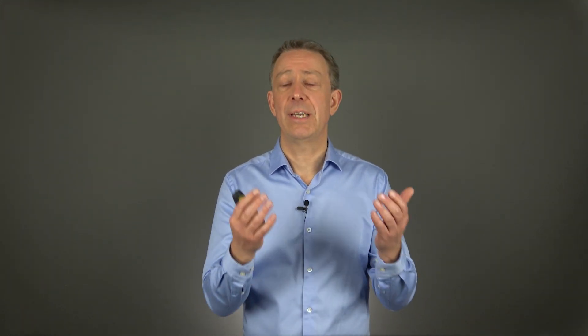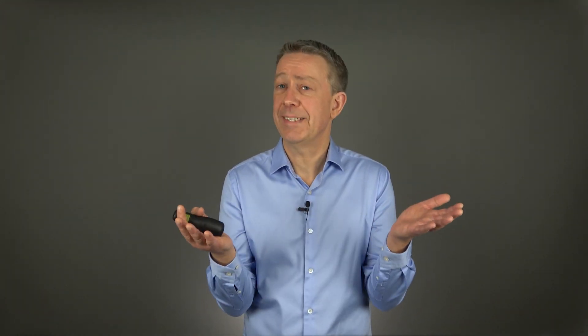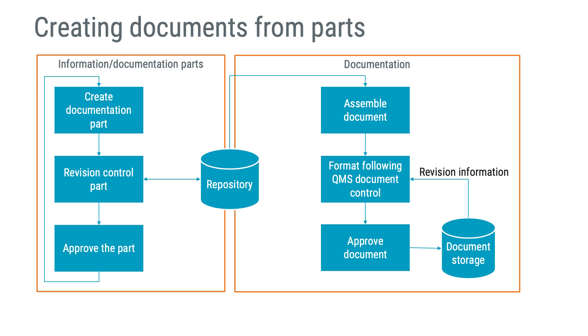Parts from the repository are collected and merged into documents. The steps required are to assemble parts into documents and formalize them following your QMS procedure for document control, including the approval process and document storage. If you combine the idea of using layers and assembling documents, you will contribute to documentation in all layers, but the formalization of documentation can be postponed to the higher layer. If you do this right, you will get high quality documentation with a minimum of administrative burden.